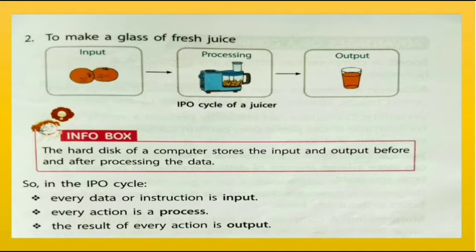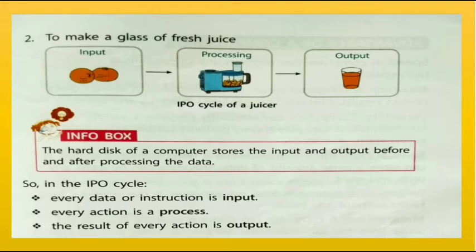Info box: the hard disk of a computer stores the input and output before and after processing the data. In the IPO cycle, every data or instruction is input, every action is a process, and the result of every action is output.